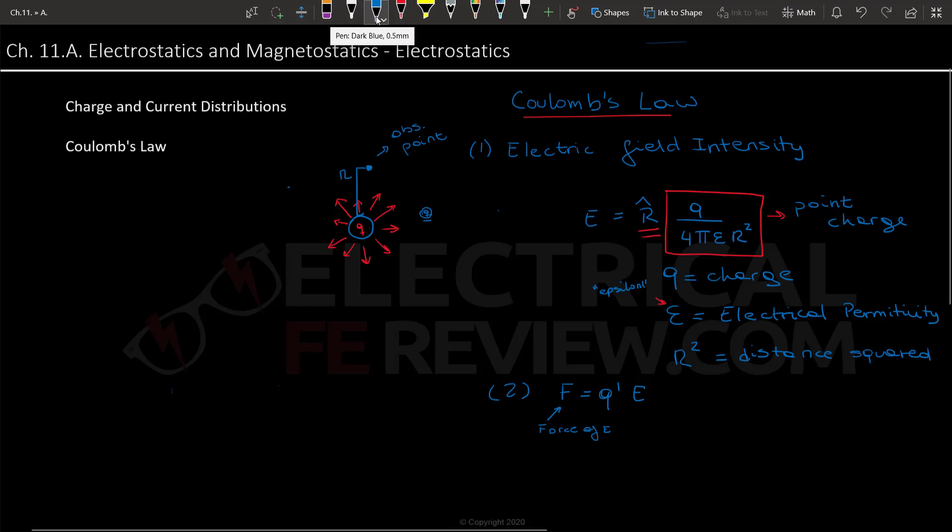So now that we know the concepts of Coulomb's Law, let's look into another concept of electrostatics that is also important. And that is the electric flux density. Electric flux density is denoted with a d and is equal to epsilon times electric field intensity. So that's important for Gauss's Law, which I will explain further in the next video.